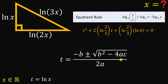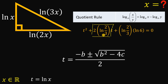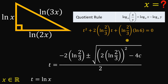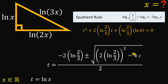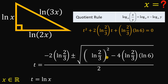Using the quadratic formula, t = [−b ± √(b² − 4ac)] / 2a, where a = 1 (coefficient of t²), b = 2·ln(2/3), and c = ln(2/3)·ln 6. Substituting, we note that (2·ln(2/3))² = 4·(ln(2/3))², so factoring out 4 under the radical gives a factor of 2, which cancels with the 2 in the denominator.